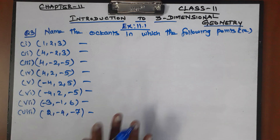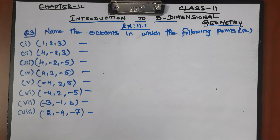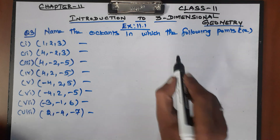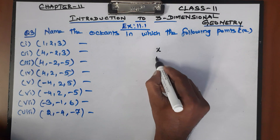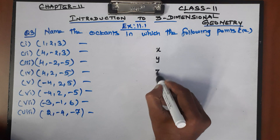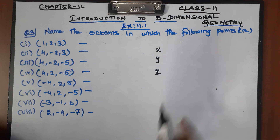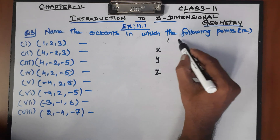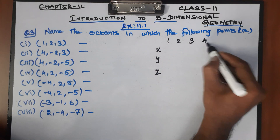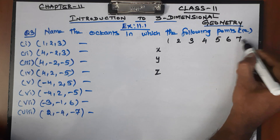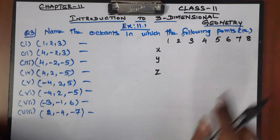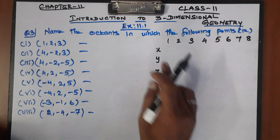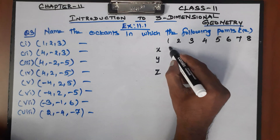Before giving the answers, let's review the introduction: with x, y, z — 3 axes — there are 1, 2, 3, 4, 5, 6, 7, 8 total octants. The first octant is (+,+,+), and each subsequent octant has a different sign combination for x, y, and z.